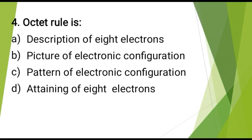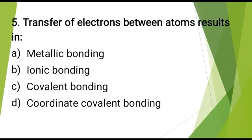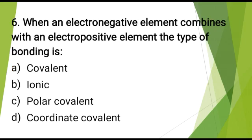Octet rule is? The correct answer is: attaining of 8 electrons. Transfer of electrons between atoms results in? The correct answer is: ionic bonding. When an electronegative element combines with an electropositive element, the type of bonding is? The correct answer is: ionic.